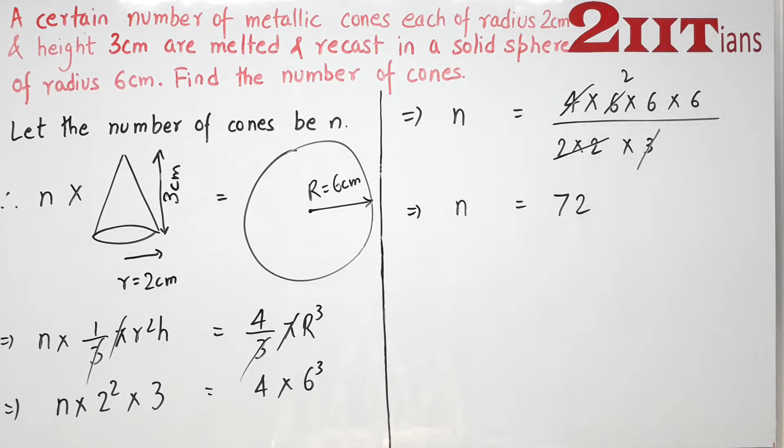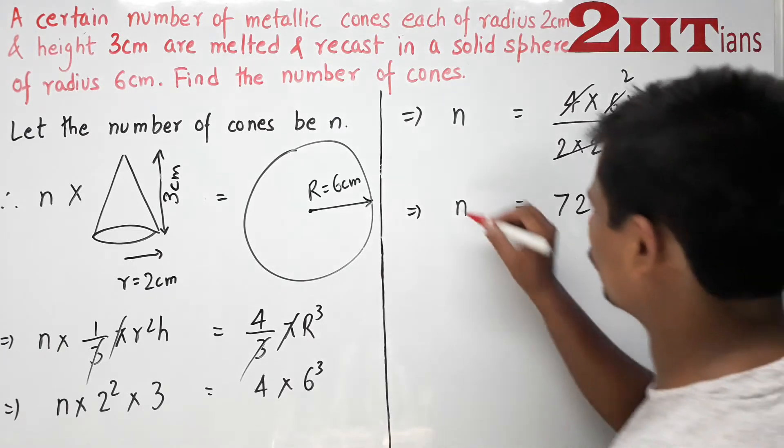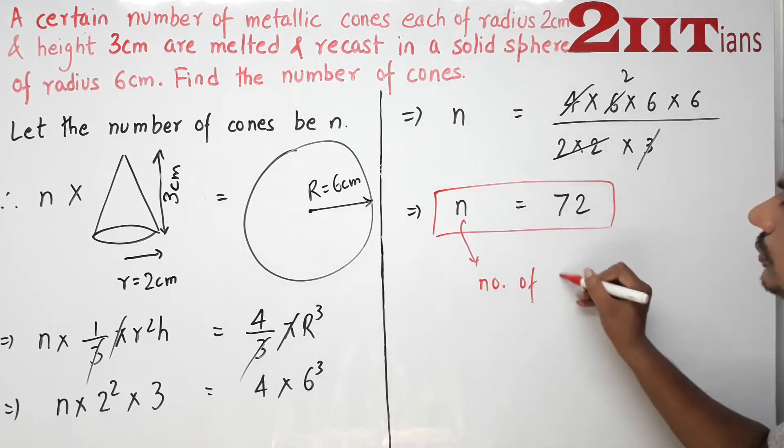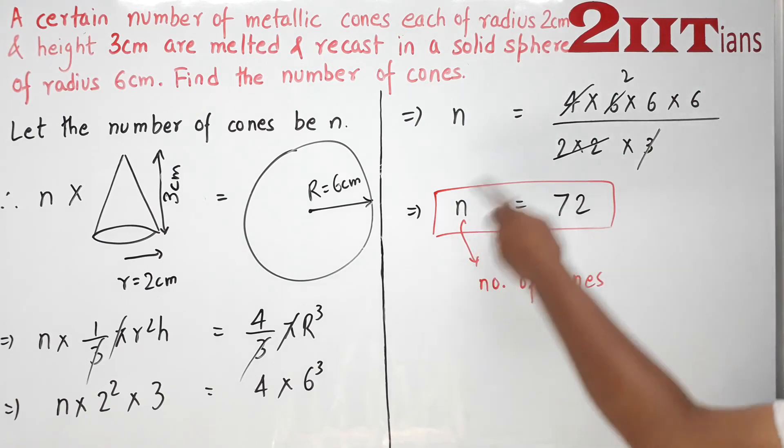72 is the number of cones. n is the number of cones, so this is our final answer.